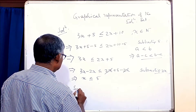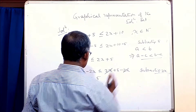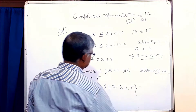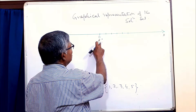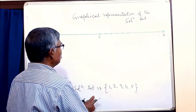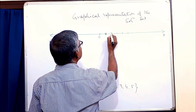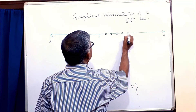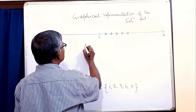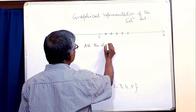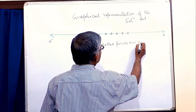So the solution set — what is the solution set? Since x is a natural number, the solution set can be represented on the number line by dots. Here on the number line: 1, 2, 3, 4, and 5. The solution set is {1, 2, 3, 4, 5}. So all the dotted points are the solution set.